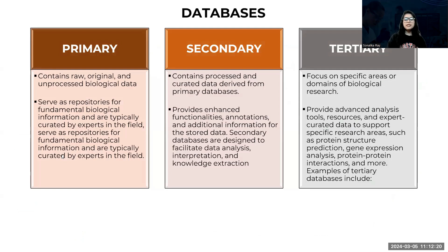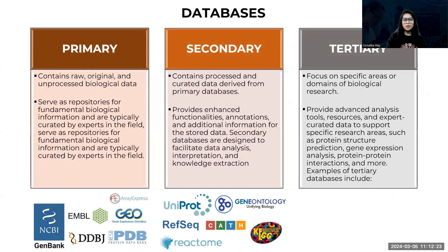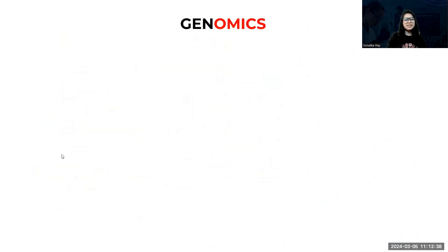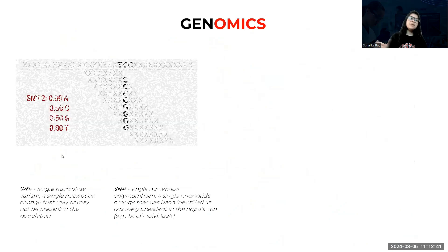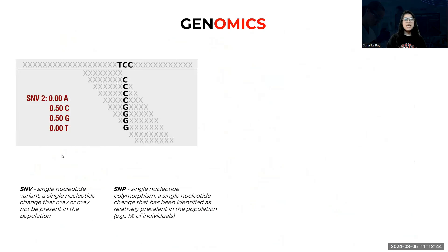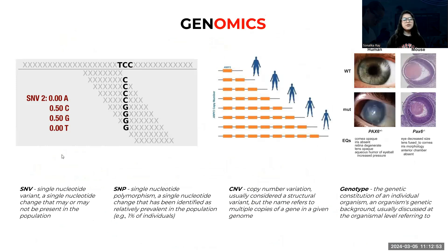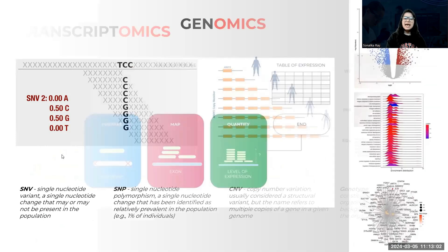Our exploration includes navigating the vast repositories of biological data. We'll categorize databases into primary, secondary, and tertiary types, each serving a unique purpose in the bioinformatics landscape. You'll gain hands-on experience with these various databases, understanding their role in storing and curating biological data. Then we'll dive into an introduction to genomics studies. Genomics provides a window into the genetic makeup of organisms. We'll explore the types of genomic variations, understand the implications of single nucleotide polymorphisms, and learn about the significance of copy number variation and genotype in the context of human biology and diseases.